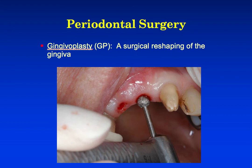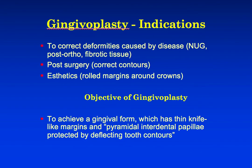Next, we need to determine what gingivoplasty is. Gingivoplasty is a term initially described by Goldman. It refers to a reshaping of the gingiva to produce a surface form and topography that simulates features believed to be characteristic of gingival health. It can be done to reduce bulk of tissue, or as you see here, to create an ovate pontic site. Gingivoplasty has several indications: we can use it to correct deformities caused by disease, such as necrotizing ulcerative gingivitis, or areas that may be thick or bulbous post-orthodontic treatment, or fibrotic tissue that hasn't shrunk following control of inflammation. Post-surgically, we may also have excess tissue requiring correction of contours.